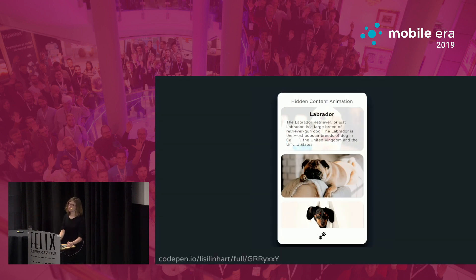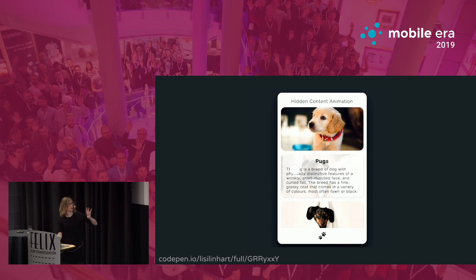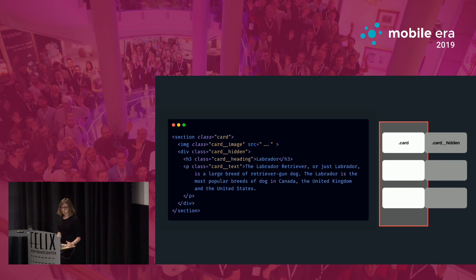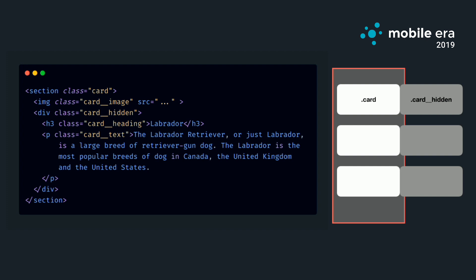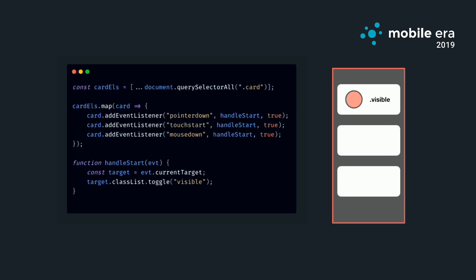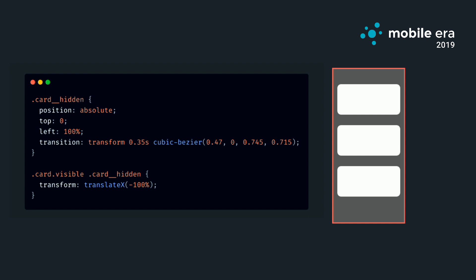This is not too hard to do on the web. I built a demo that shows some dogs, and when you tap one, you get additional information. We have one element where the hidden text is positioned to the right, hidden off-screen similarly to the bottom navigation. We listen to touch events — or mouse or pointer events — and the only thing we need to do when registering a touch event is toggle a CSS class: toggling the visible class that animates the new content in or out. In CSS, we transition the transform again because that's the most performant.